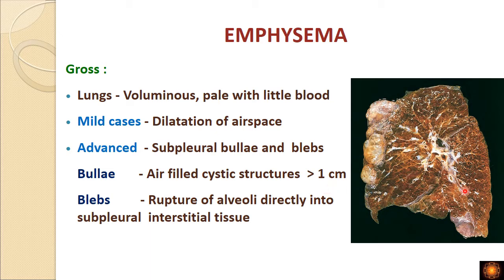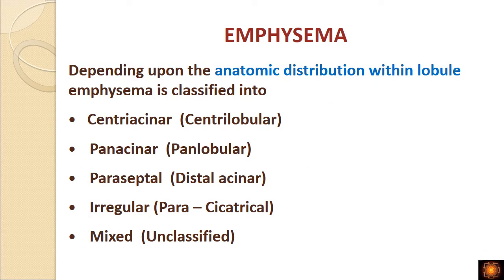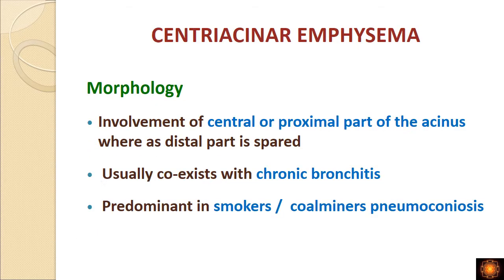Depending on which part of the acinus is involved, emphysemas are classified by anatomical distribution into five types: centriacinar, panacinar, paraseptal, irregular, and mixed. We will now look at the individual types and their morphological changes.